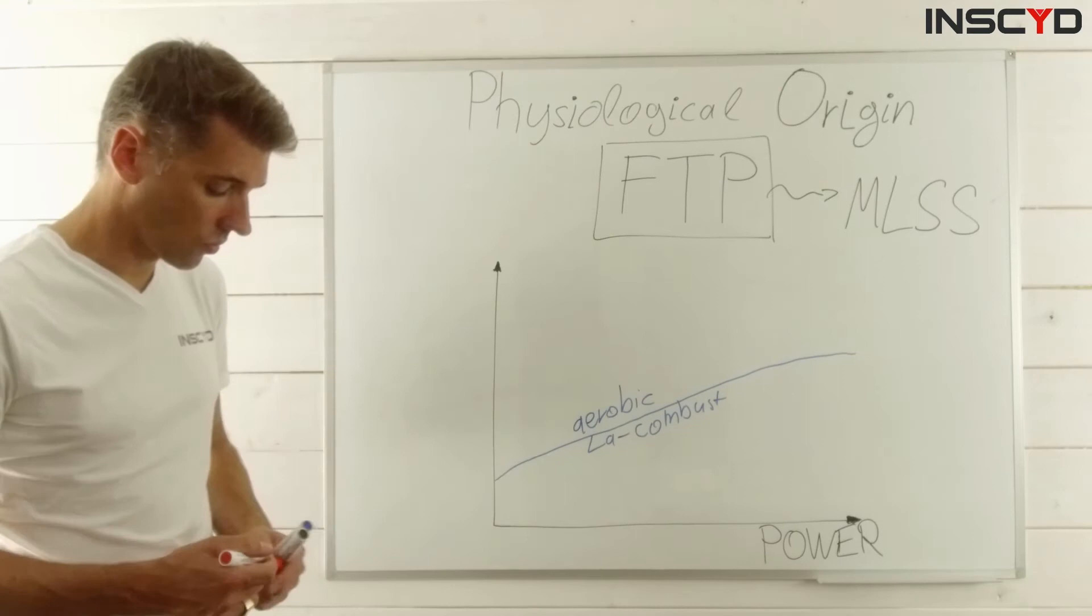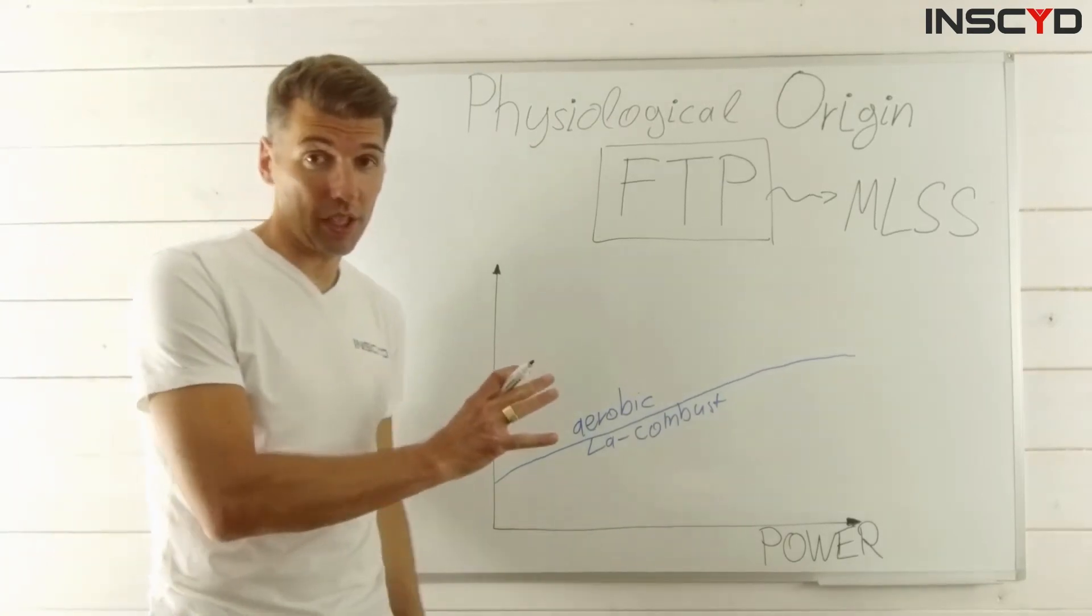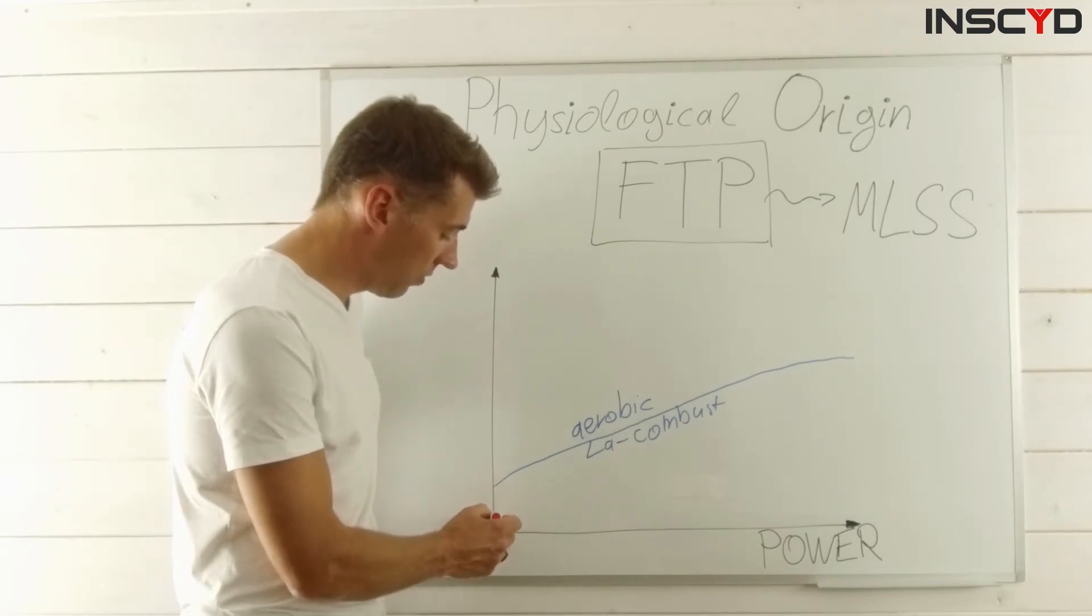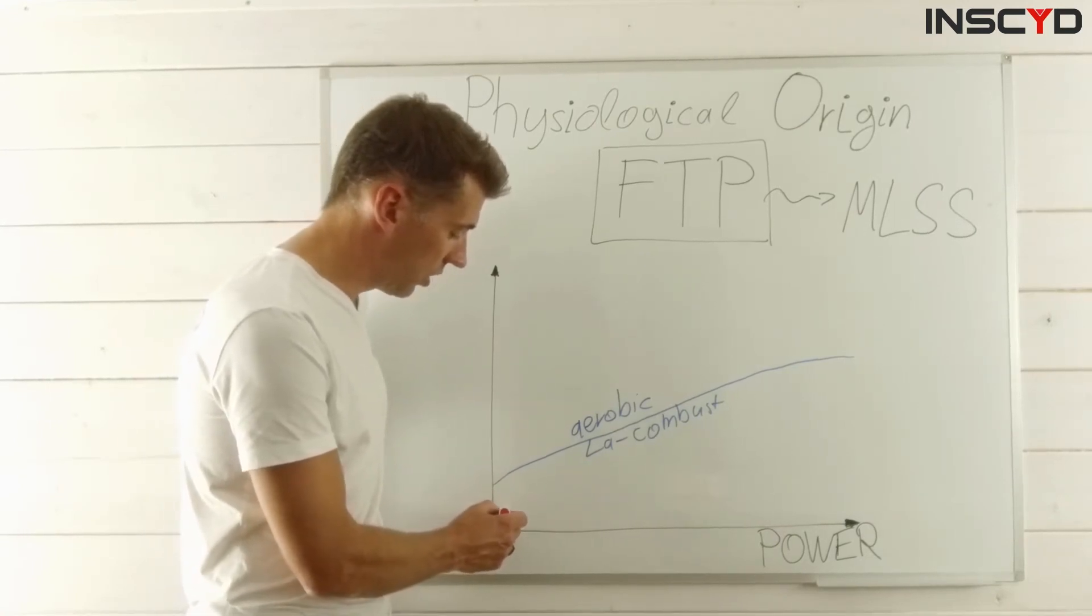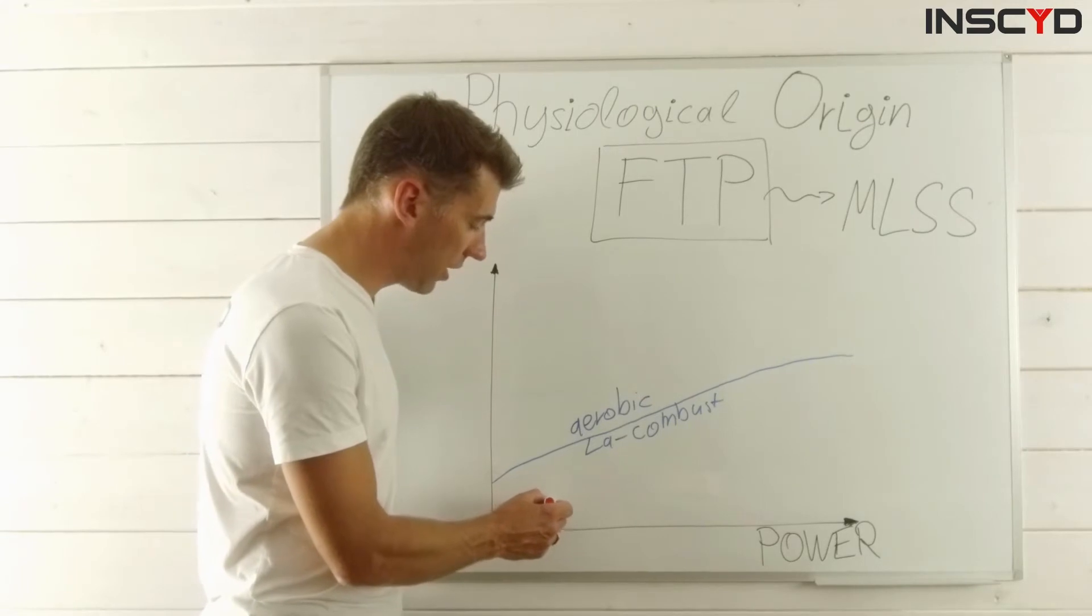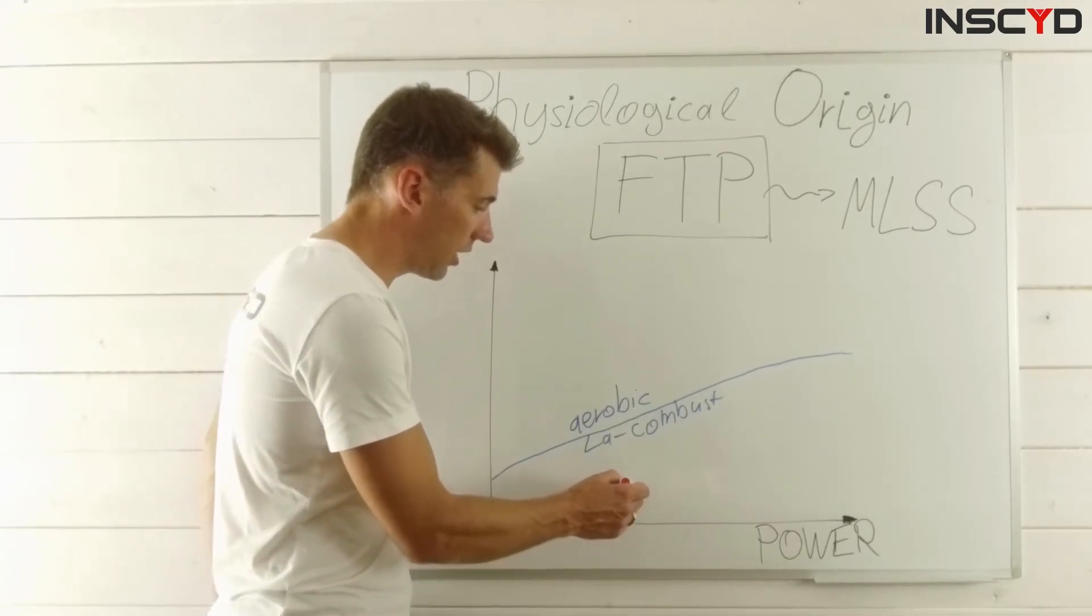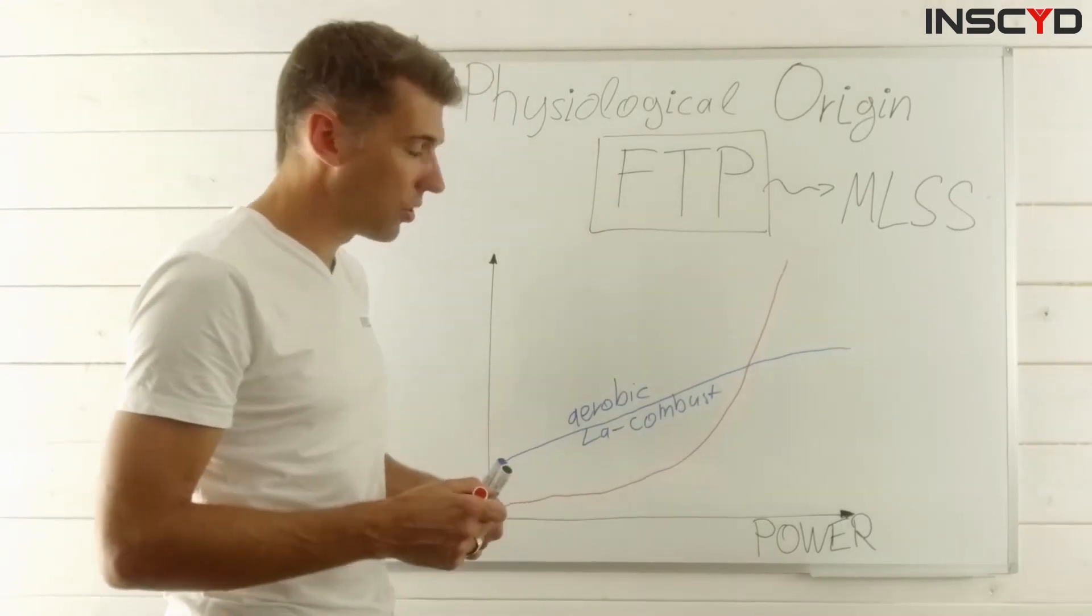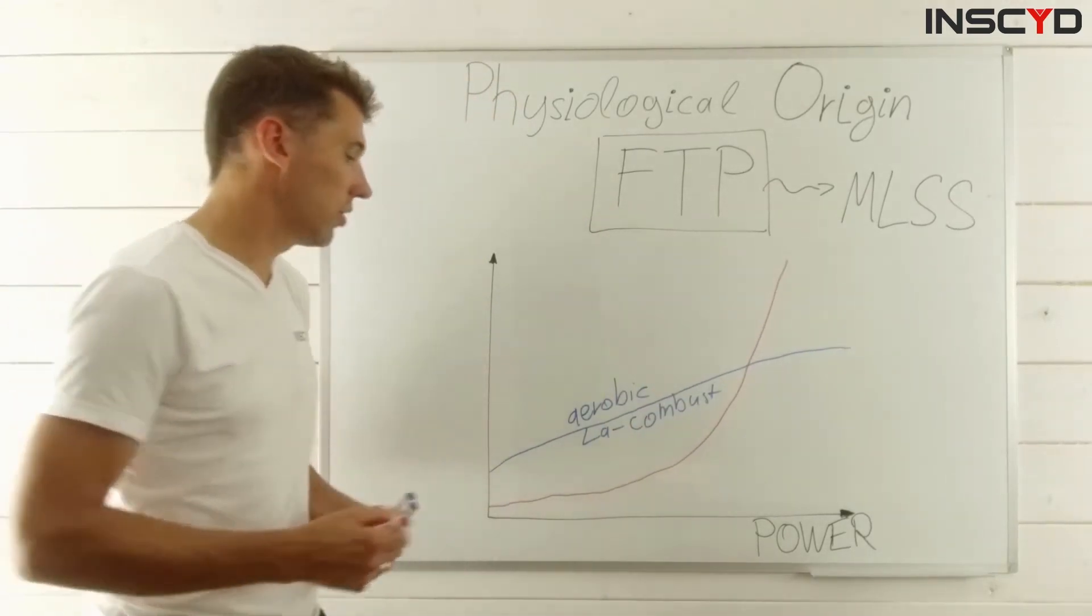The lactate production, however, looks quite different. Lactate production has more like a curved linear shape. So it's a very mild increase here, and then at a certain intensity it shows this exponential increase. This is lactate production in the anaerobic metabolism.